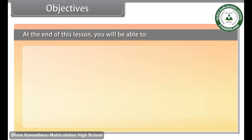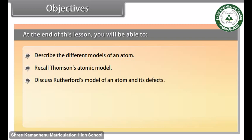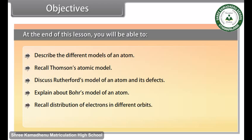Objectives. At the end of this lesson, you will be able to describe the different models of an atom, recall Thomson's atomic model, discuss Rutherford's model of an atom and its defects, explain about Bohr's model of an atom, recall distribution of electrons in different orbits, and distinguish between atomic number, mass number, isotopes and isobars.